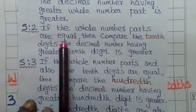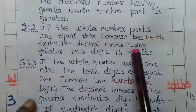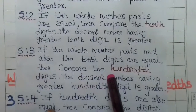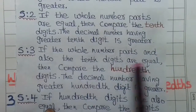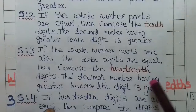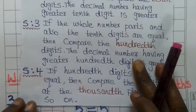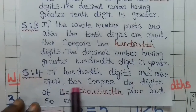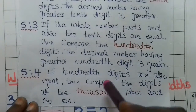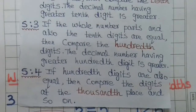Step 2: compare the decimal part digit by digit. If one is greater or less, that gives the answer. If equal, continue comparing the next decimal digit — tenths, then hundredths, then thousandths.